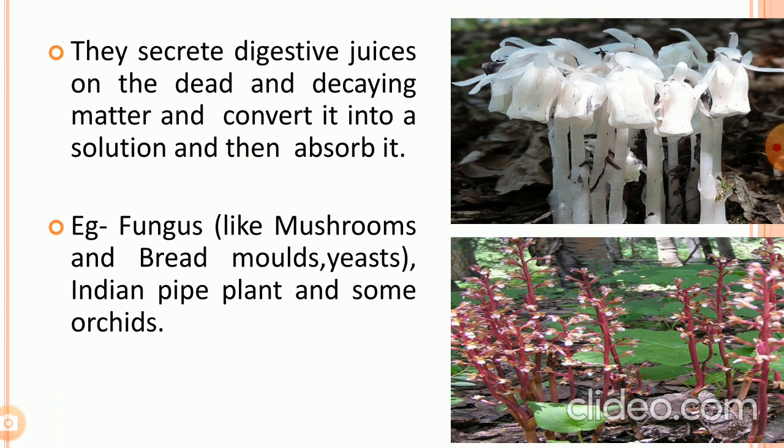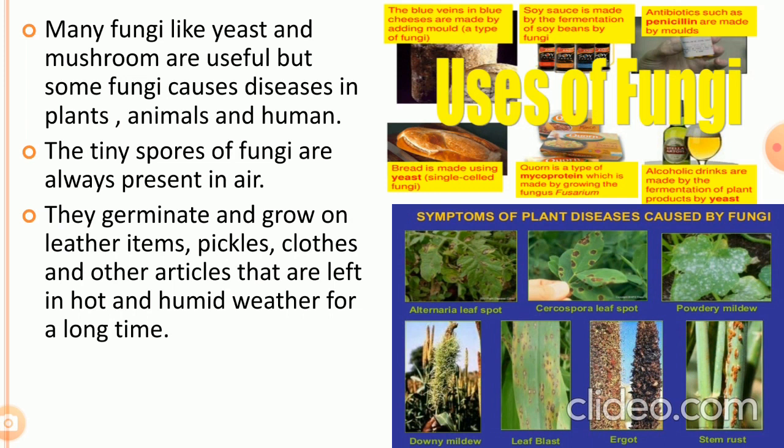Examples of saprophytic plants include fungi like mushrooms, bread molds, yeasts, the Indian pipe plant, and some orchids. Many fungi like yeast and mushroom are useful, but some fungi cause diseases in plants, animals, and humans. The tiny spores of fungi are always present in air; they germinate and grow on leather items left in hot and humid weather for a long time.